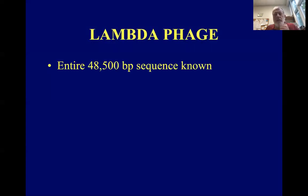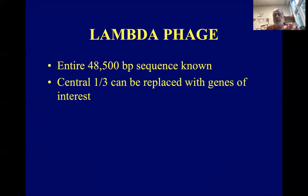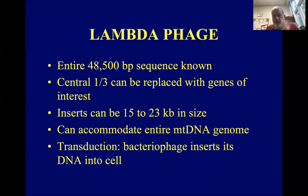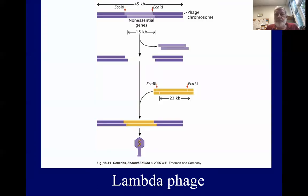Lambda phage: we know the entire 48,500 base pair sequence. The central third of genes can be removed and our gene of interest inserted there — it can take inserts up to 23,000 base pairs in size, so whole mitochondrial DNA molecules can go in. Transduction is the process where the bacteriophage inserts its DNA into the cell. The non-essential genes from the middle are removed, the gene of interest inserted, the virus reconstituted, and it will inject its DNA into a bacterial cell. As the bacterial cells divide, they make copies of the gene of interest.